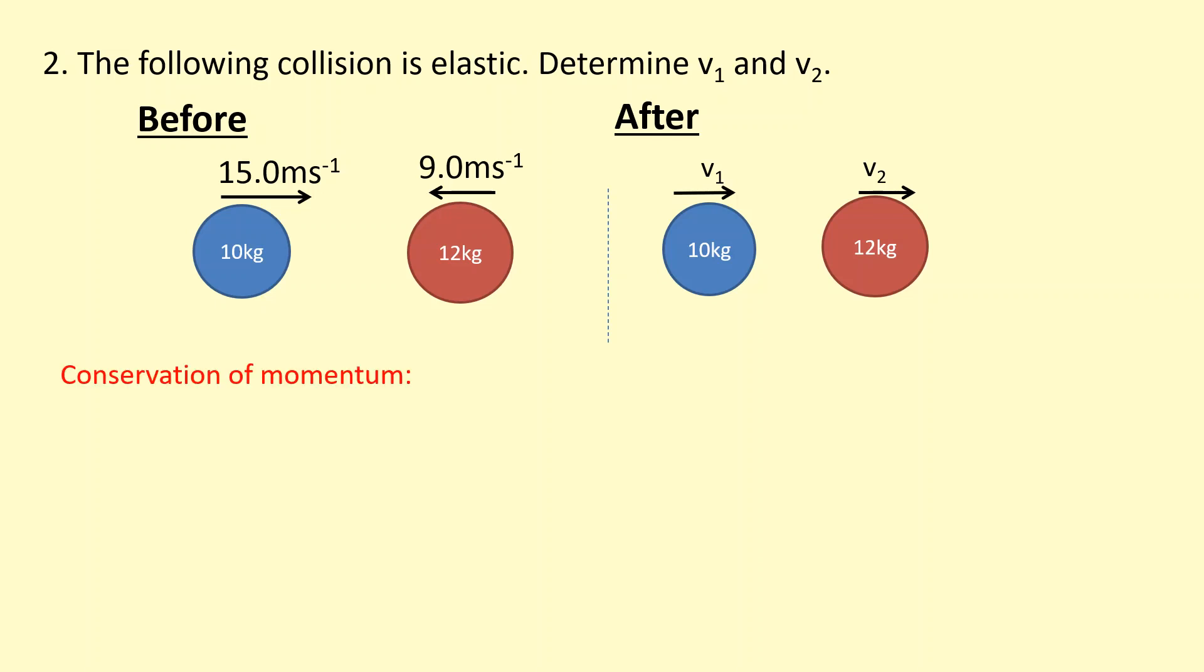So we're going to start off with the conservation of momentum, which must always be true. So I'm going to work out the total momentum on the first side and equal it to the total momentum on the other side. So I'm being careful to use minus 9 for the particle that's going towards the left. I'm going to simplify this and I get the equation 9 equals 10v1 plus 12v2.